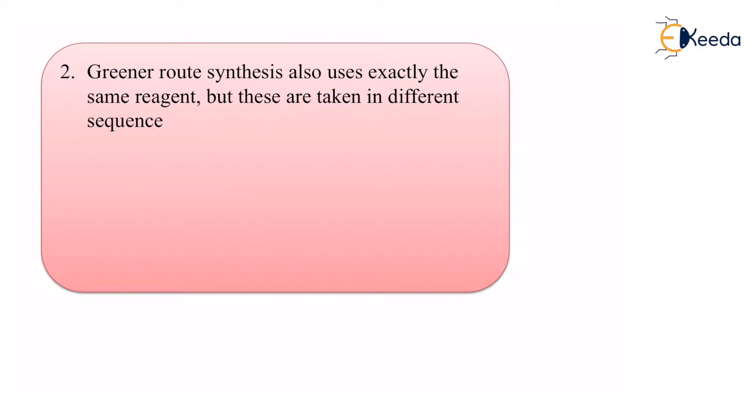Greener route synthesis is also used which also exactly uses the same reagent, but these are taken in different sequence. Hence the sequence avoids the proportion of methyl isocyanate. Now it is very important for us to understand that just to have a greener route or just to have a better route it is not necessary that we should change the raw materials. You can keep the same raw materials and yet you can have a greener route or a better route.